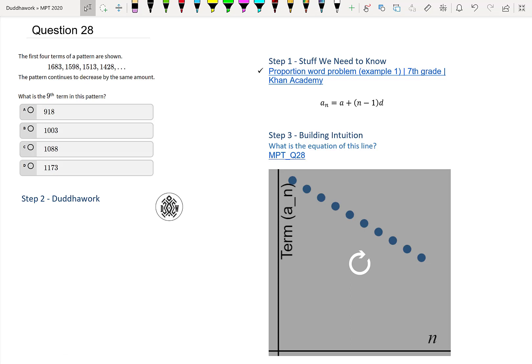We're given a sequence of four terms: 1683, 1598, 1513, 1428. And it says that the pattern continues to decrease by the same amount. What is the ninth term in this pattern?